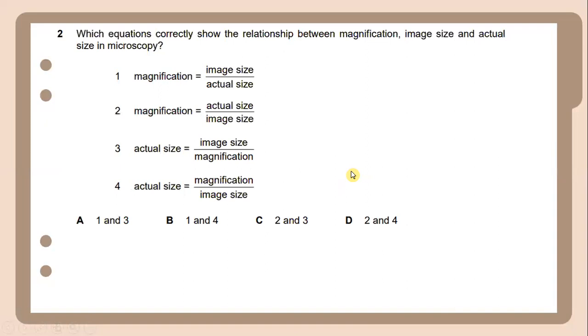Which equation correctly shows the relationship between magnification, image size, and actual size in microscopy? The formula for magnification is image size divided by actual size. And when you want to get the actual size, the formula is image size divided by magnification. So the answer for number two is 1 and 3.